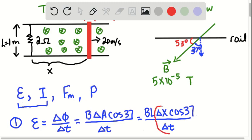So once you're at this point, hopefully you recognize that change in X over change in time is your velocity. Since in this case, it is constant velocity because they didn't say otherwise. That is indeed just change in length over changing time. So you can rewrite this whole equation as BLV times cosine of 37.